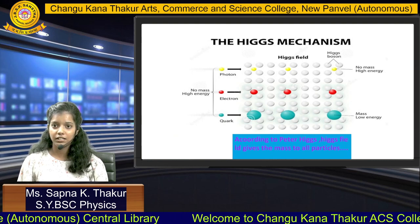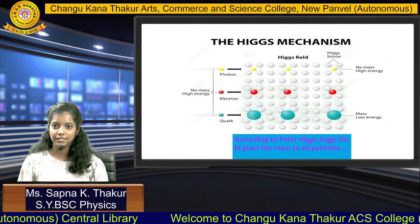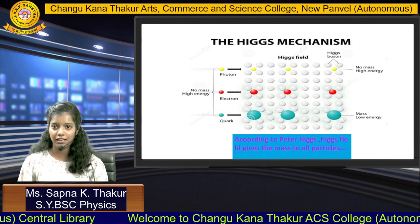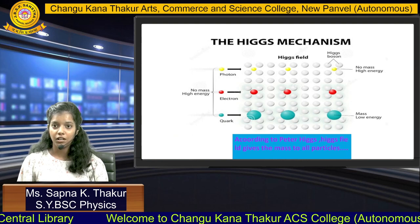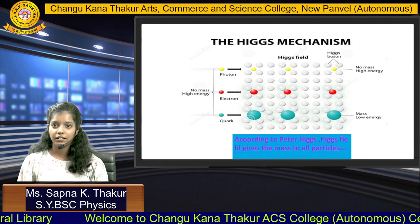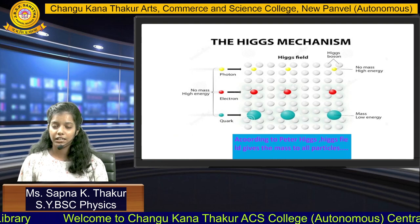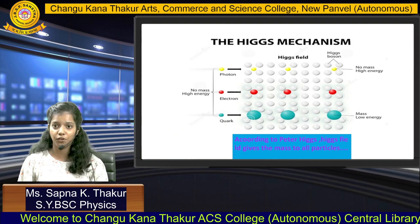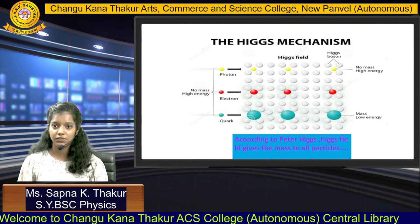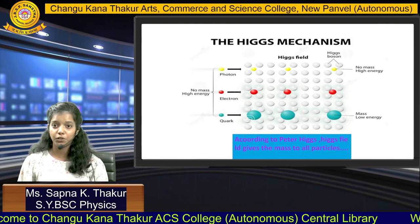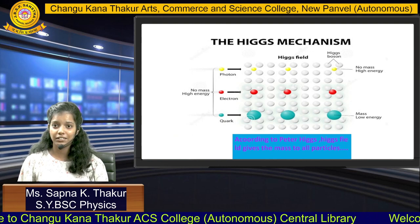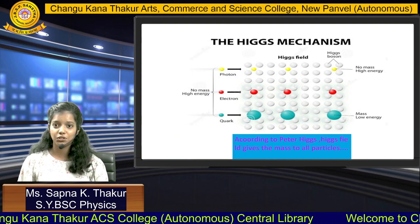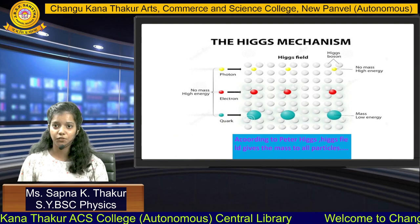Consider the quark as Einstein and the accountant as a photon. The quark interacts more with the Higgs field and gets more mass from it. But the photon does not interact with the Higgs field, so it does not get mass from the field.